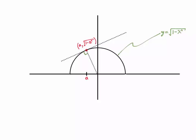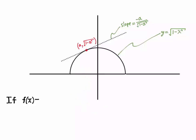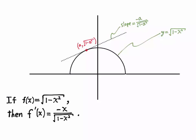To find the slope of the tangent line, I'll use a property of circles: the tangent line is perpendicular to the radius at any point. So I just have to find the slope of the radius — rise over run between the origin and the point a comma square root of 1 minus a squared. That gives square root of 1 minus a squared over a as the slope of the radius. Therefore, the slope of the tangent line is the negative reciprocal of that, giving us the derivative of f(x) = square root of 1 minus x squared as negative x over square root of 1 minus x squared.